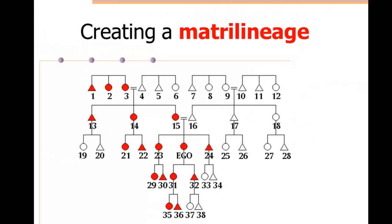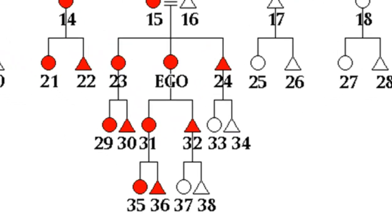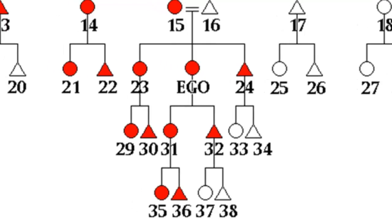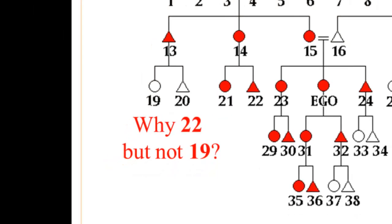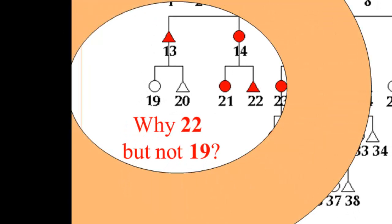The result of this is a matrilineage, and this shows the matrilineage of Ego, who's female in this chart. We could also use a male Ego and show a matrilineage. But again, if we look over in the left-hand corner, we have this distinction between two types of cousins, and we can pose this question. Why is 22, Ego's male cousin, a member of his matrilineage, while 19, who is a female cousin, is not?